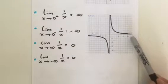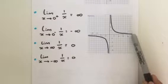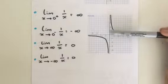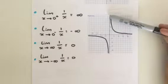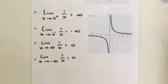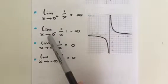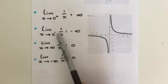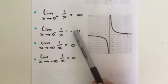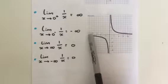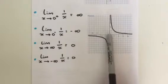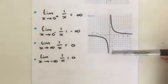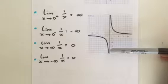Looking at the graph, starting at the origin, as x comes from the right we can see that the limit tends to infinity along the vertical asymptote x equals zero, which it never touches. The same thing holds for the limit as x approaches zero from the left — negative means from the left — of one over x equals negative infinity. Coming from the left as x approaches zero, the limit approaches negative infinity along the same vertical asymptote.